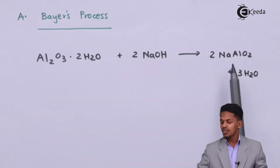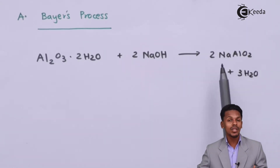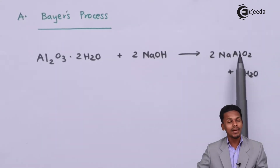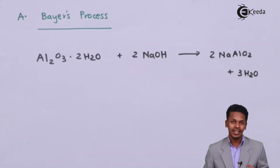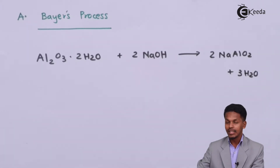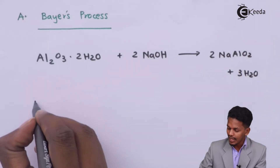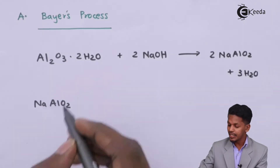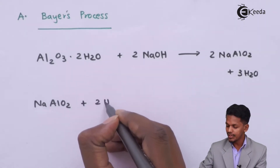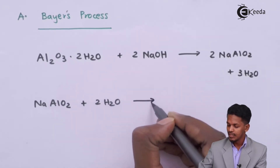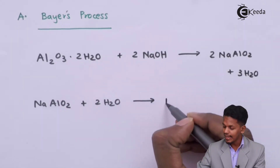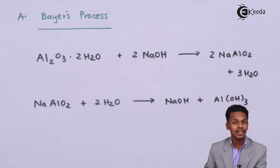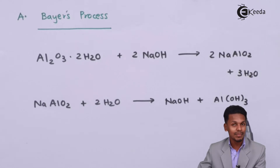The product obtained is two moles of NaAlO₂, known as sodium meta-aluminate, along with three moles of H₂O. This sodium meta-aluminate is the soluble part. When NaAlO₂ is further treated with two moles of water, the products obtained are NaOH and Al(OH)₃, that is aluminum hydroxide.